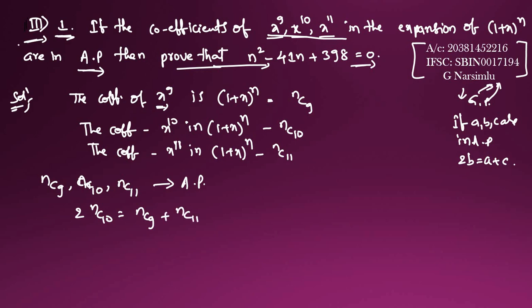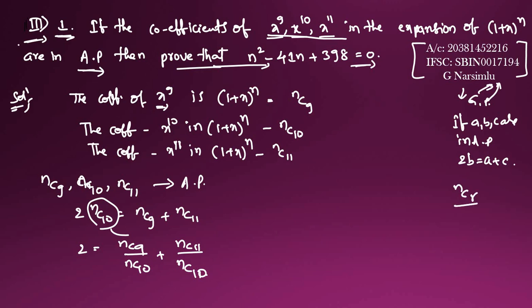Dividing both sides by nC10, we get 2 = nC9/nC10 + nC11/nC10. We use the formula nCr / nC(r-1) = (n - r + 1) / r to simplify each ratio.